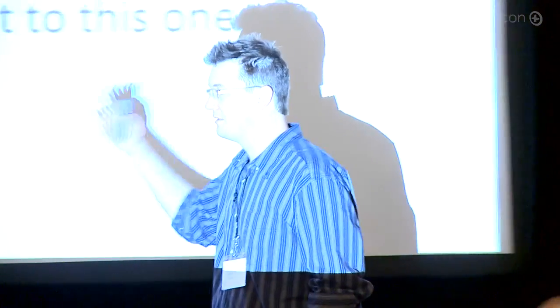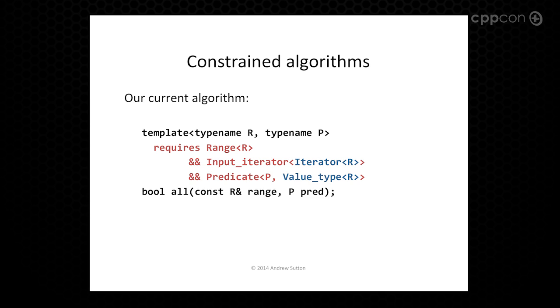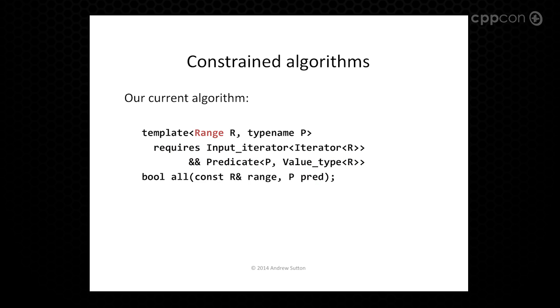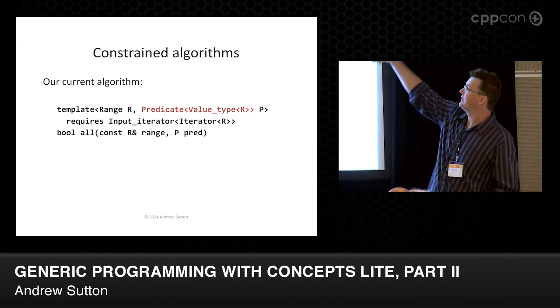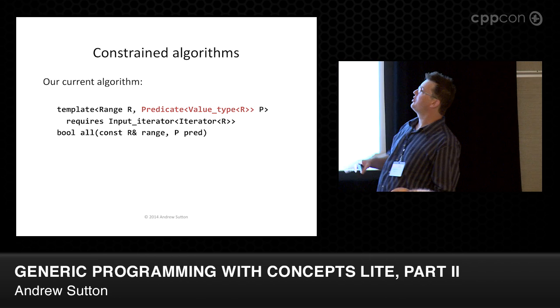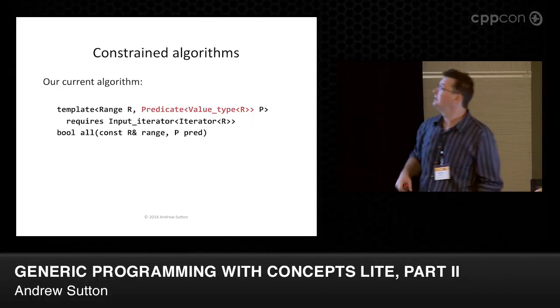Currently it's true that the shorthand notation may not be a replacement for the template syntax. There are still templates we want to write that don't work well with it. So if this is our declaration, we can go ahead and lift the first constraint up and get range<R>. Then the next one we want to work on is predicate P, but P isn't just any predicate — it's actually a predicate on the value type of the range. So in order to specify that you add the extra argument. The declared parameter ends up being the first argument of the constraint when you check it.